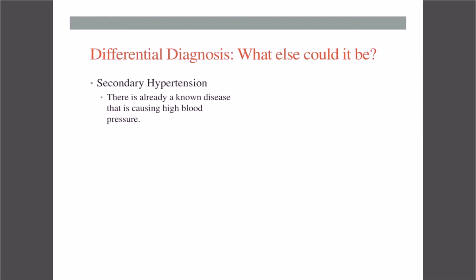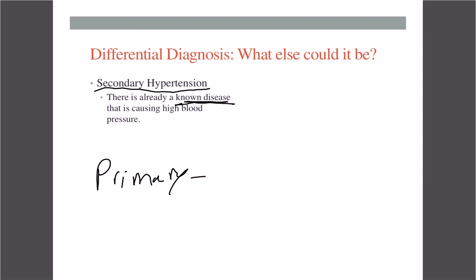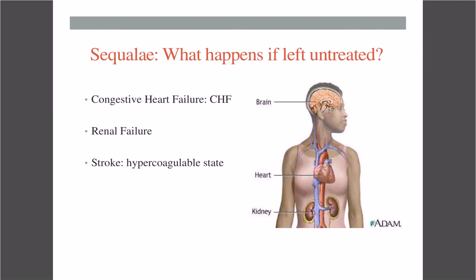For differential diagnosis, there's something called secondary hypertension. The difference between primary and secondary hypertension is that primary means you don't have any other disease causing the high blood pressure, while secondary means you already have a disease that is causing it. A common example is renal failure or renal disease — your kidneys are starting to become affected.